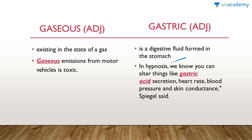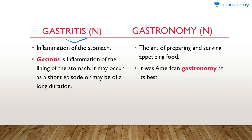Gastric is an adjective, which means relating to a digestive fluid formed in the stomach. In a sentence: 'In hypnosis we know you can alter things like gastric acid secretions, heart rate, blood pressure and skin conductance,' Spiegel said. Gastritis is a noun, which means inflammation of the stomach. In a sentence: 'Gastritis is inflammation of the lining of the stomach. It may occur as a short episode or may be of a long duration.' Gastronomy is a noun, which means the art of preparing and serving appetizing food. In a sentence: 'It was American gastronomy at its best.'